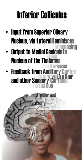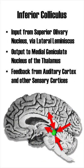The IC receives input from the superior olivary nucleus via the lateral lemniscus. Output goes to the medial geniculate nucleus of the thalamus before it eventually arrives at the primary auditory cortex. Additionally, the IC receives feedback from the auditory cortex and other sensory cortices.